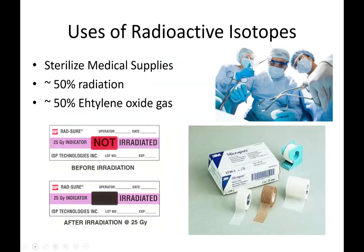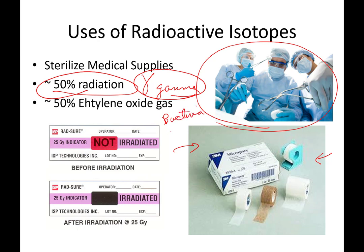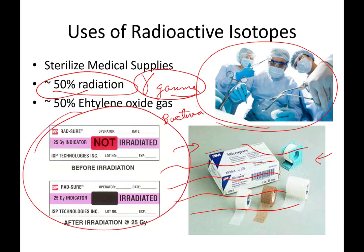Another use of radioactive isotopes is sterilizing medical supplies. Medical supplies are produced in non-sterile regular factories, but when opened in a surgical suite we need them to be perfectly sterile. After packaging, they are exposed to a large dose of radiation — usually gamma radiation — which penetrates the packaging and kills the bacteria and viruses inside. Often large cases of medical supplies will have a sticker that changes color after the radiation process to confirm it has been irradiated.